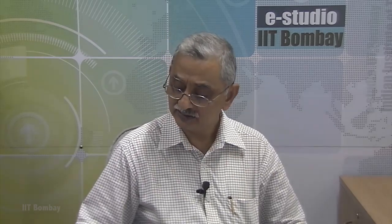if this is a rigid cylinder and if there are going to be no significant variations in temperature and pressure, we will say that the volume is unlikely to change. And hence, volume may not be listed as a relevant characteristic in this particular case.